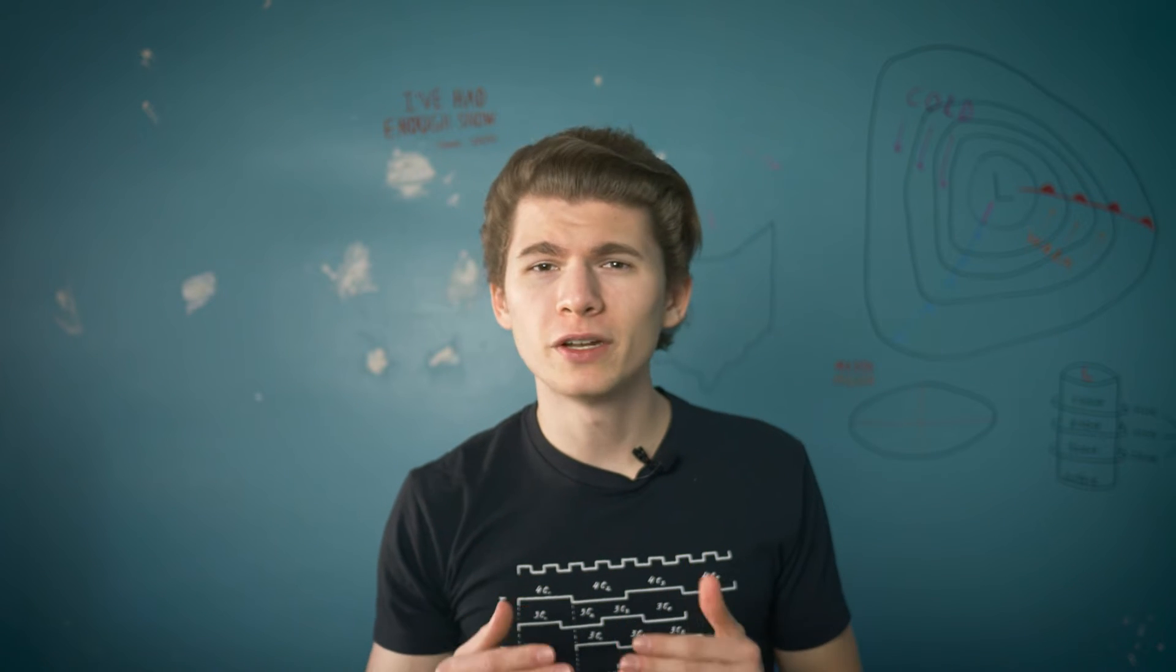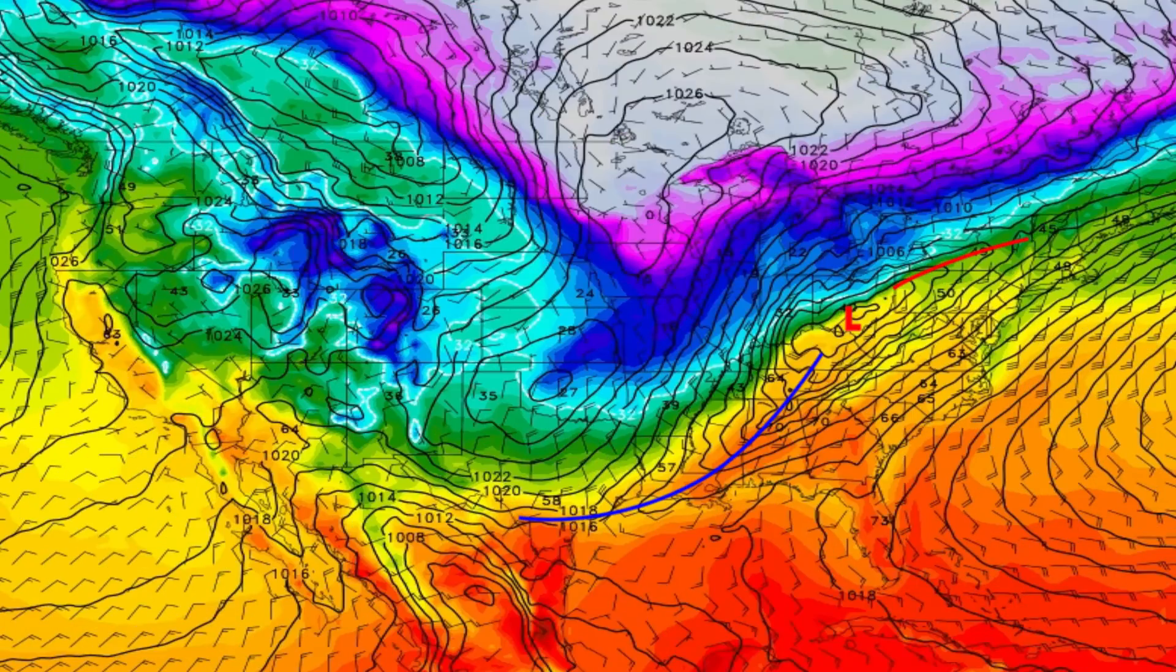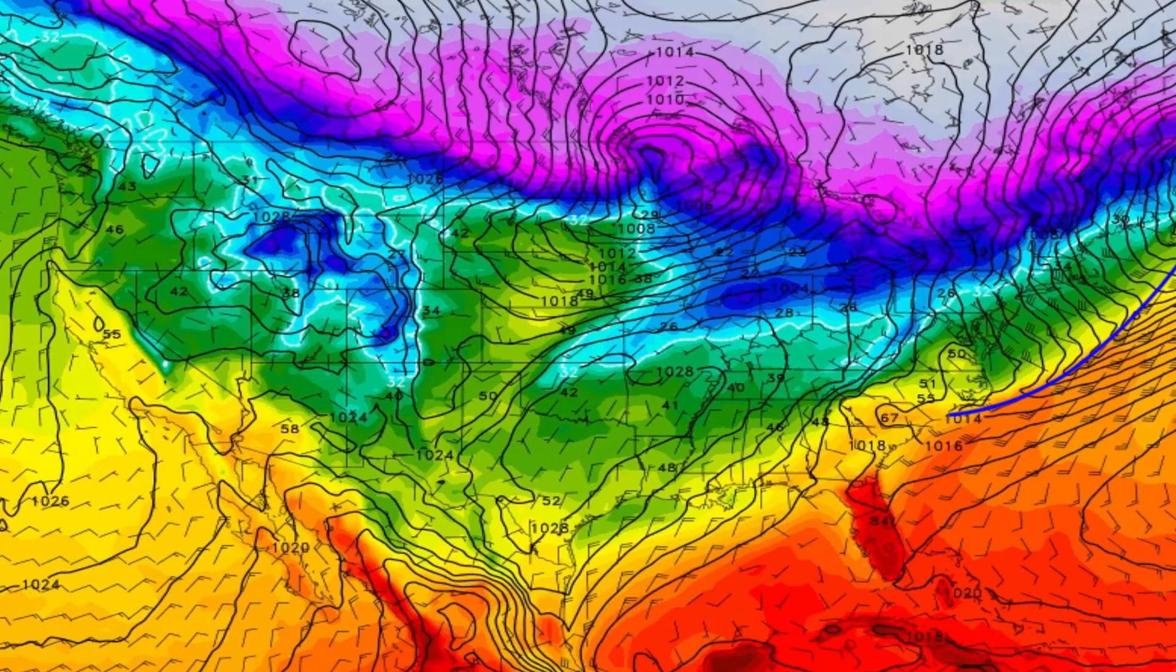In late February, the dominating cold air starts to weaken a bit, just enough to where the jet stream can occasionally surge to the north. This brings the cyclone along with it, allowing the warm front to sweep through areas that have been stuck in the 20s for weeks.